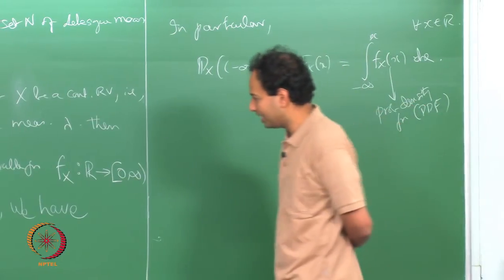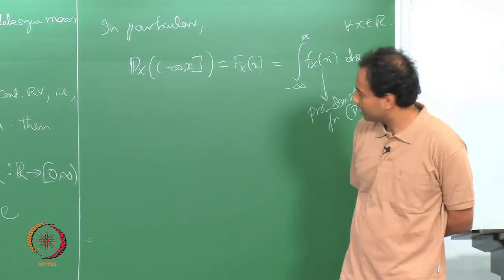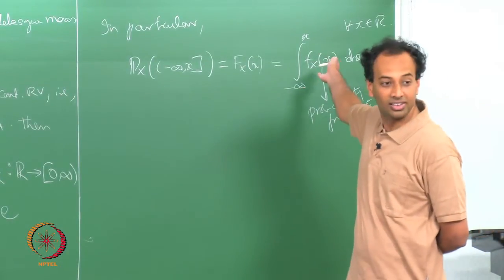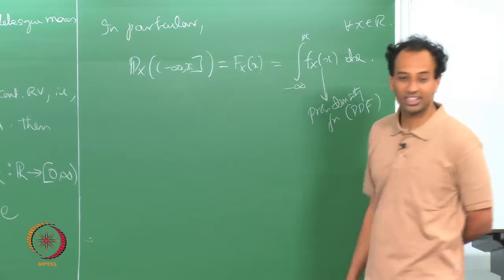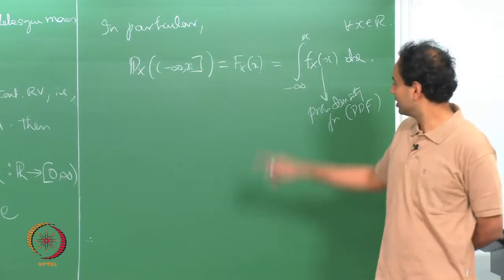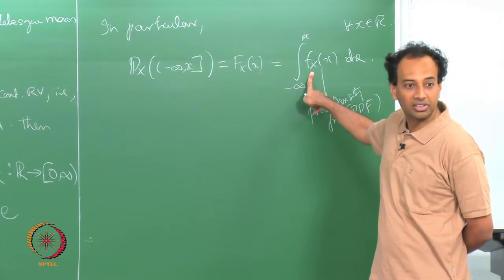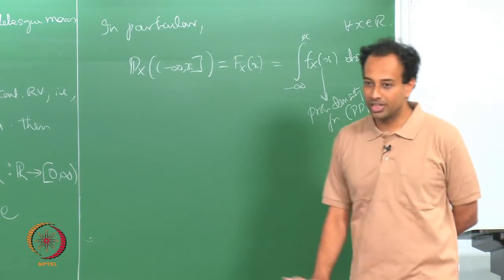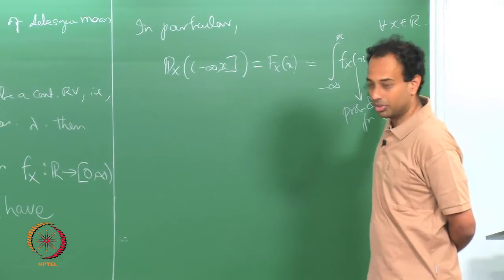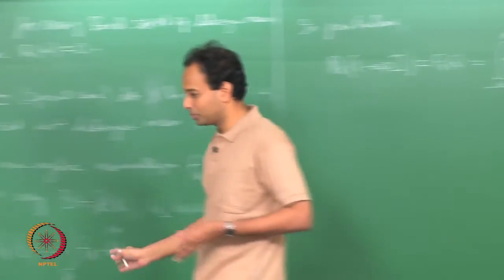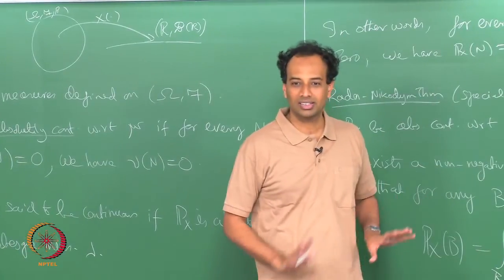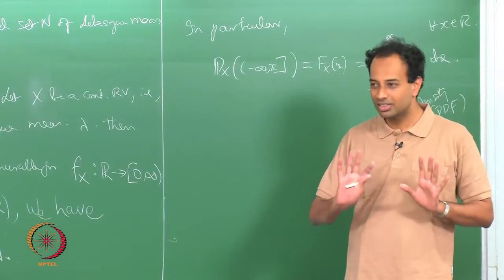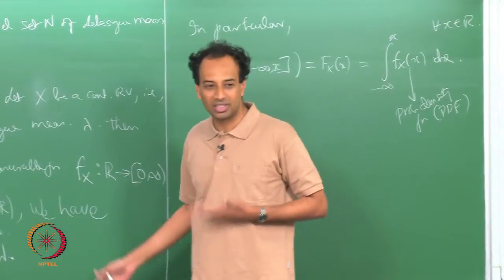In slightly more elementary treatments, continuous random variables are often defined by this directly — some books say x is a continuous random variable if its CDF can be written as the integral from minus infinity to x of some non-negative function f_x. That is also a correct definition; both are equivalent. What I am trying to do here is place in context where this density function is coming from, deriving it naturally from a measure-theoretic theorem.